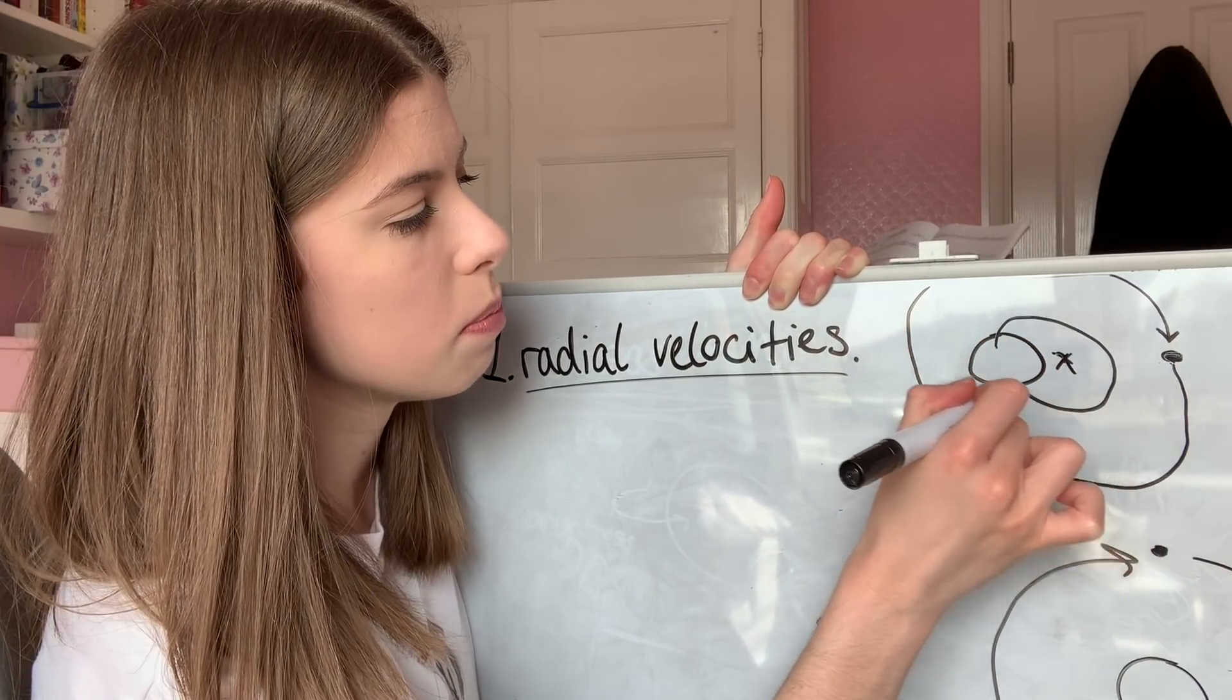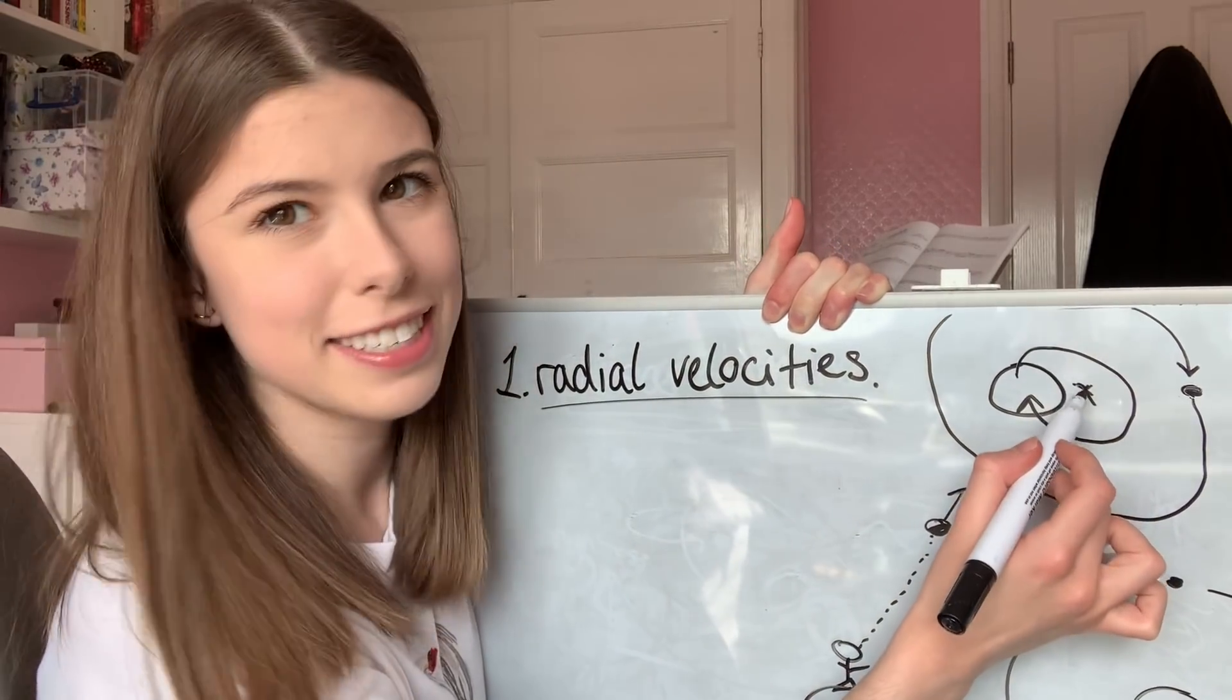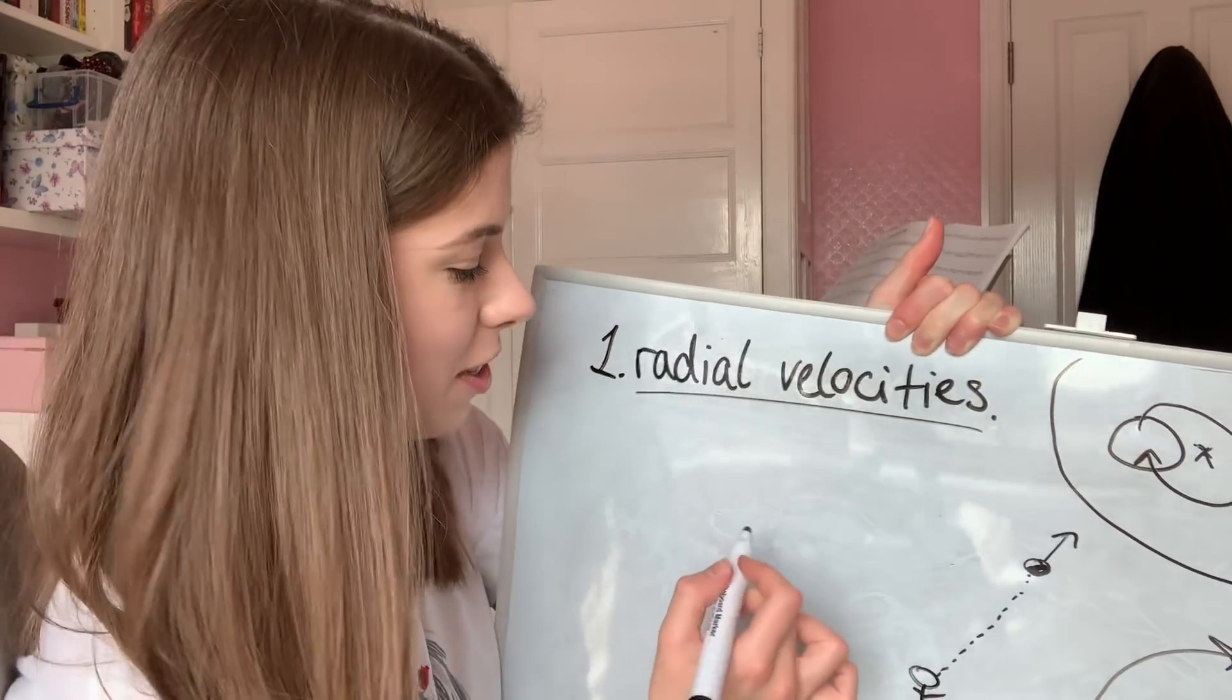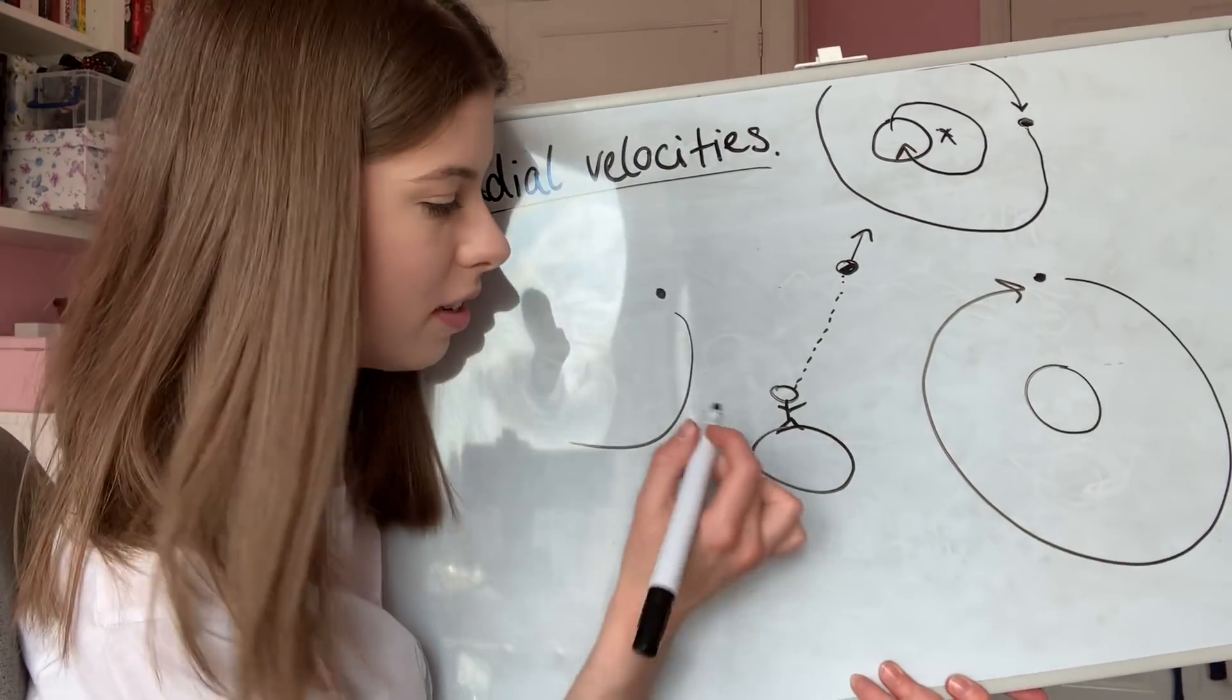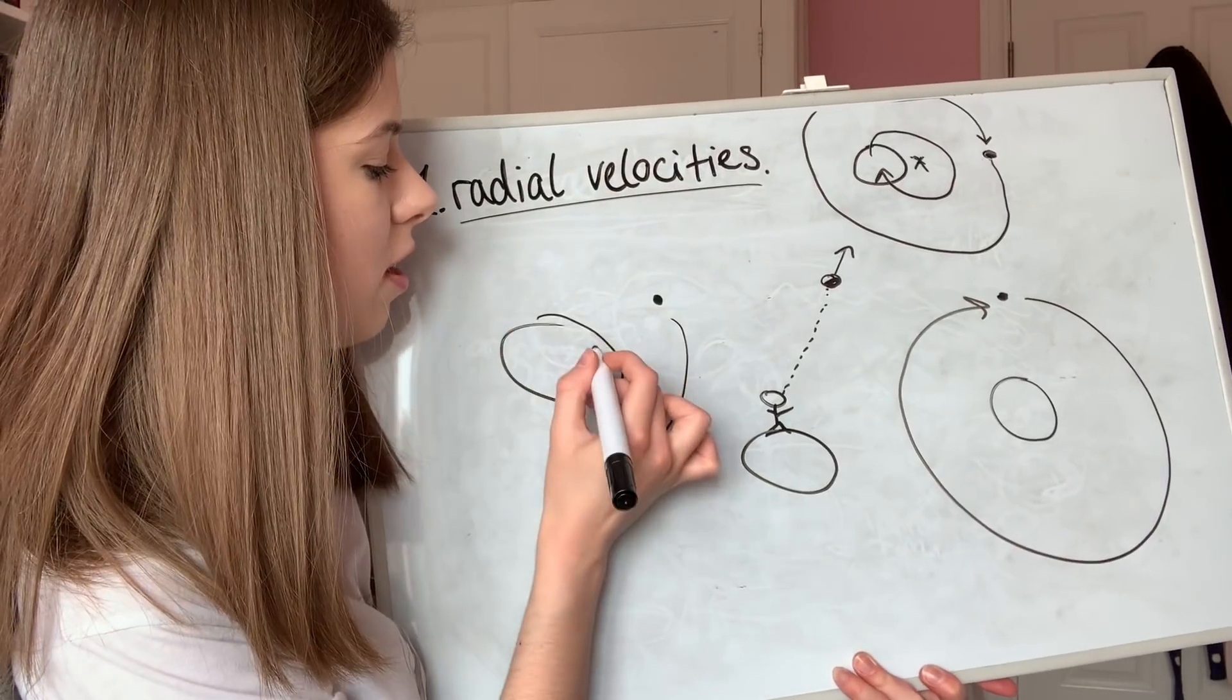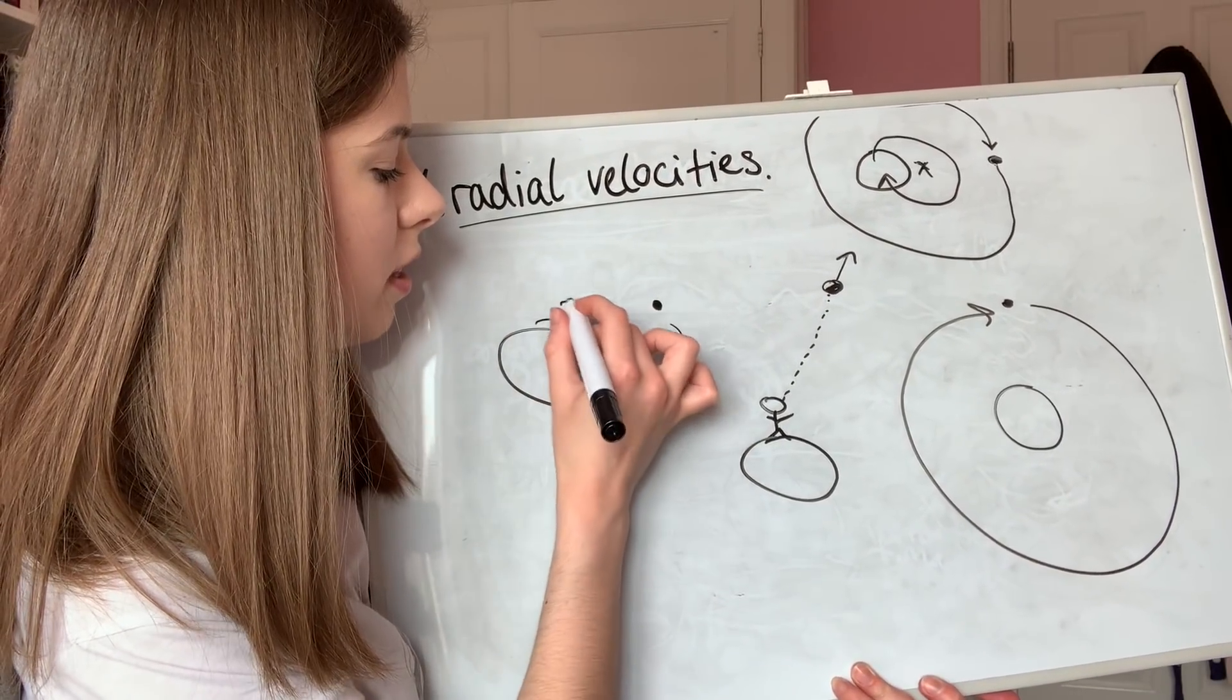The more massive object is also performing little mini wobbles around the center of mass. Let's apply that to a star and a planet. The center of mass will actually usually be within the star. So here's the star - if this is the center of mass, then it's gonna kind of go around like that.